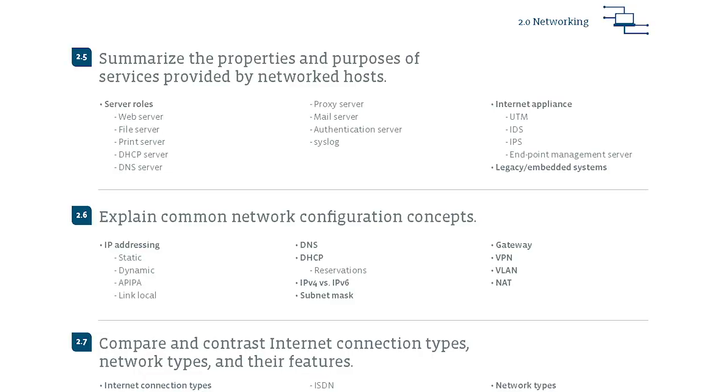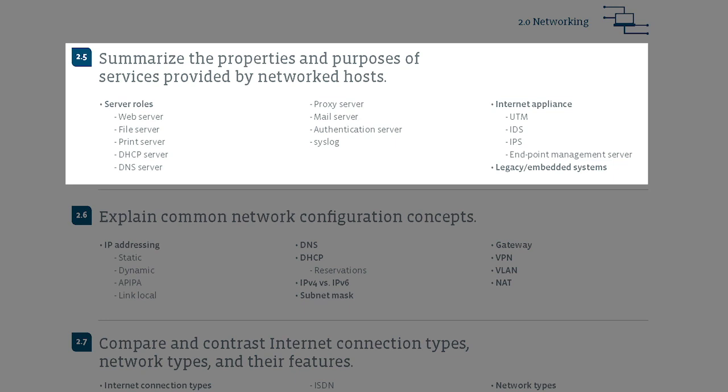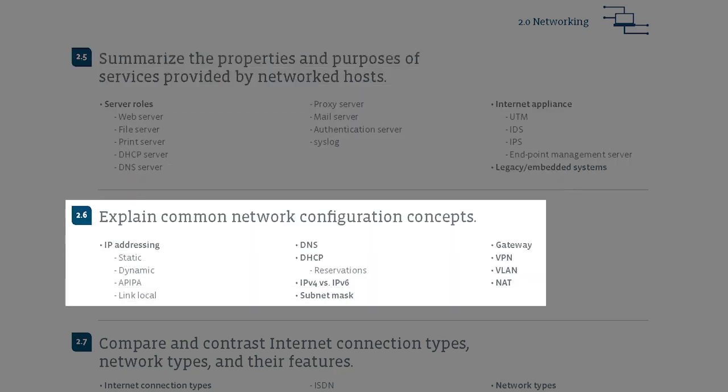There's one more type of objective. For example: summarize the properties and purposes of services provided by network hosts — a web server, a file server, a DHCP server, a DNS server. And then explain common networking configuration concepts like DNS or DHCP. Notice they are not telling you to configure these things; they're expecting you to understand what DHCP is and why it's important for your individual network devices. Within A+, we use these domain sub-objectives to get a real feel for what we're supposed to know — not just DHCP, but how it's going to affect an individual system.